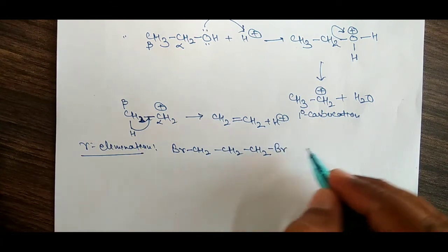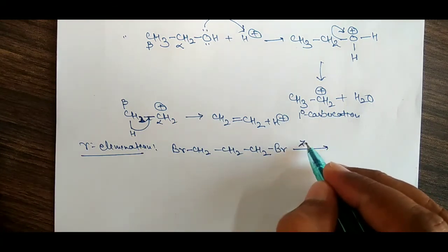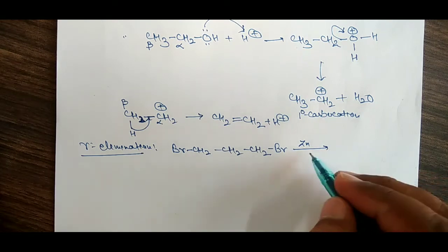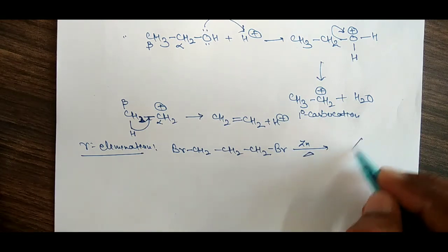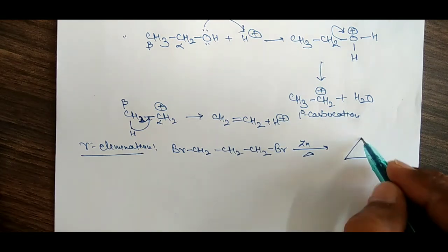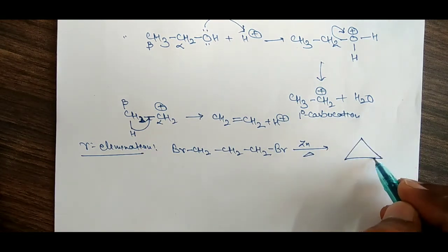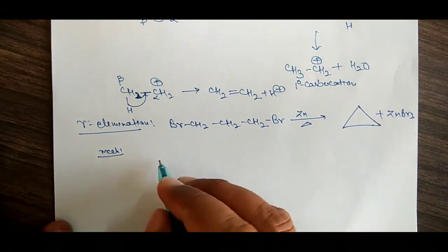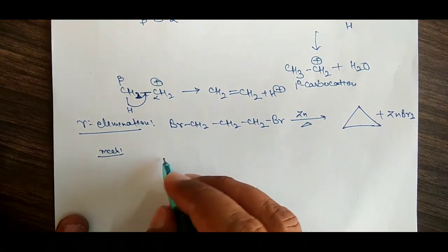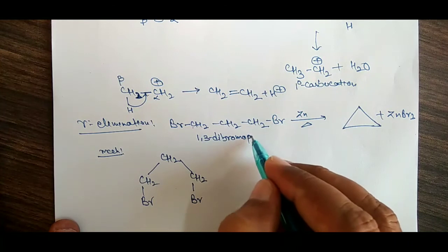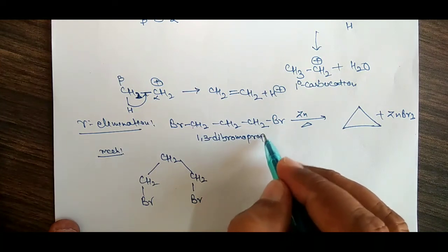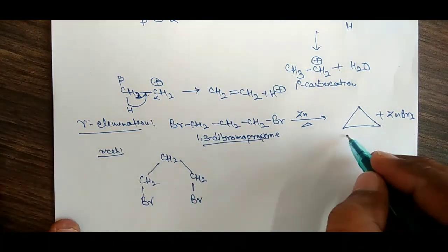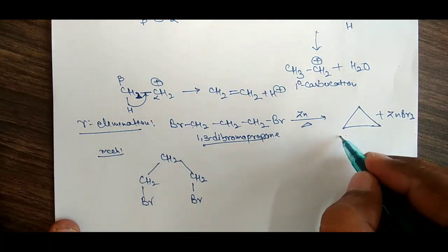Now, an important point: if we label the carbon bearing the OH as the alpha carbon, then the adjacent carbon is the beta carbon. Therefore, the loss of proton takes place from the beta carbon. That is why it is called here the beta elimination reaction.